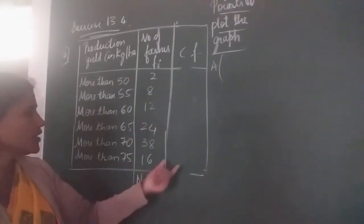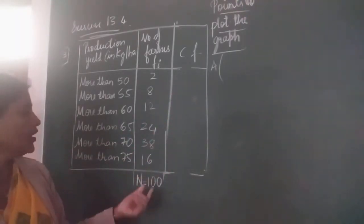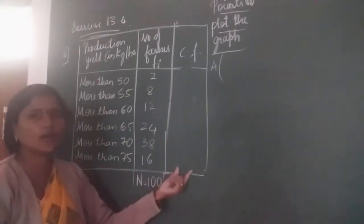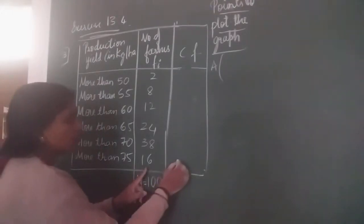Now let us find the cumulative frequency. Usually in less than type, we used to get an increasing order. Now we will get a decreasing order because it is more than type. You have to take the lower limit here, so you have to start from the downside.